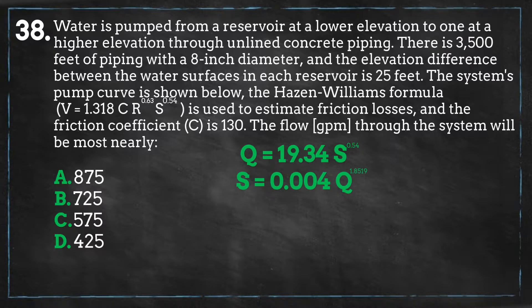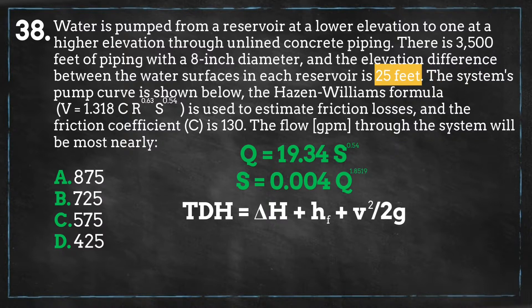The TDH we will be solving for to place on the pump curve equals the following: where delta H is the difference in elevation, H sub F as mentioned earlier equals the head loss, V equals the flow velocity, which is equal to the flow rate Q divided by the pipe's cross-sectional area, and G equals gravity, which in US customary units equals 32.17 feet per second squared.